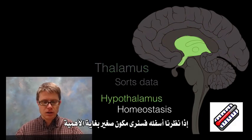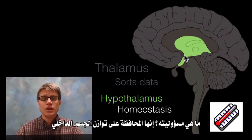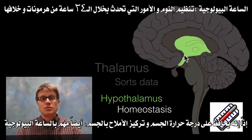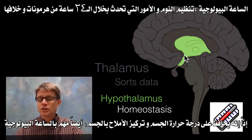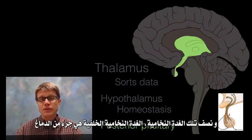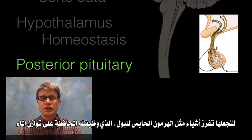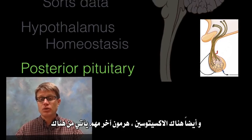Below the thalamus is a critically important structure called the hypothalamus, located right above the roof of your mouth. It's responsible for homeostasis — maintaining body temperature, osmolarity, and circadian rhythms. Hanging below it is the pituitary gland; the posterior pituitary is technically part of the brain and sends out hormones via nerves, including antidiuretic hormone to maintain water balance and oxytocin.